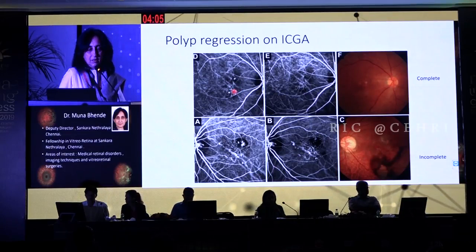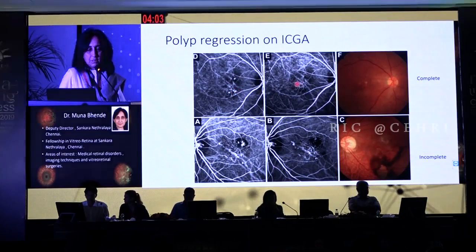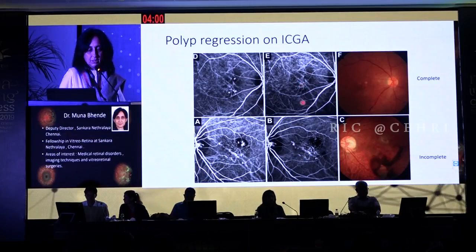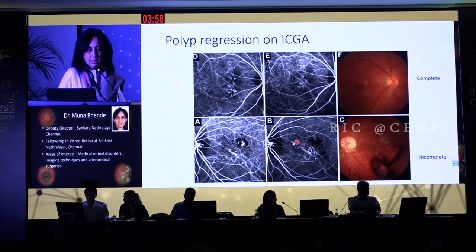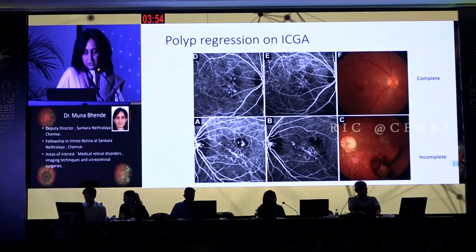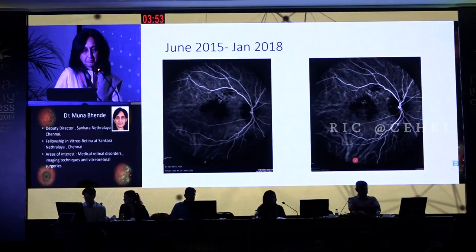This is an example of a patient with complete regression on ICG. You see the vascular network with the polyps, and post-treatment they disappear — this is complete regression. Whereas in this case, you see there are some polyps still active, and this is incomplete or partial regression.